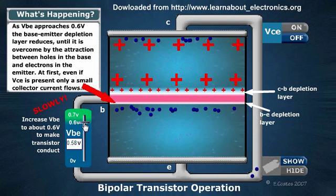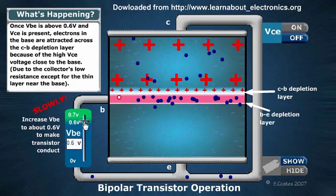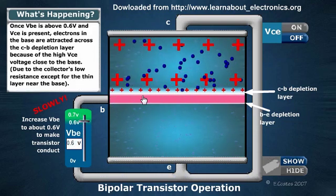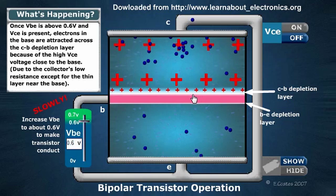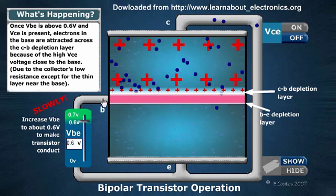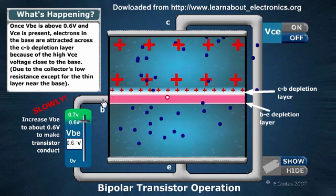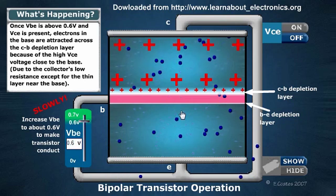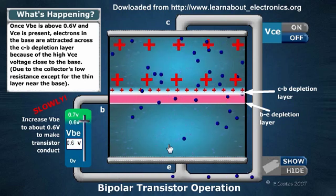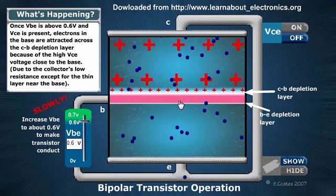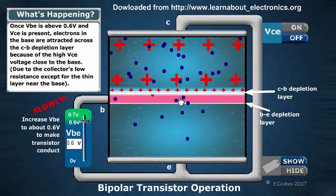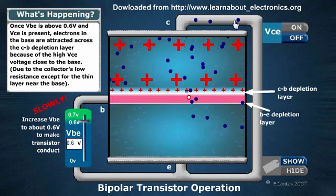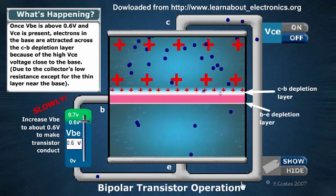A bit more — once we hit 0.6V, we have a steady flow of positive charge into the base, attracting the electrons into the depletion zone. But as soon as they're in the depletion zone, they shoot straight across to the collector. We start to have a large current flow.